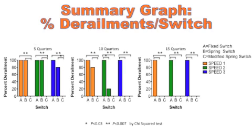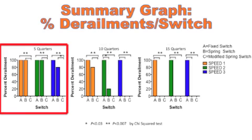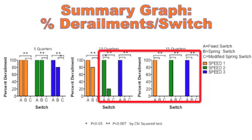Switch A was always statistically different from switch C. In the five-quarter trials, switch B was always statistically different from switch C. In the ten-quarter trials, switches B and C were only statistically different at the lowest speed, and after that there was no statistical difference between the two.